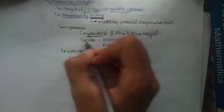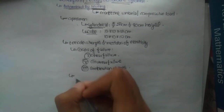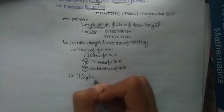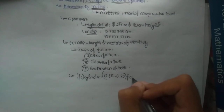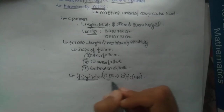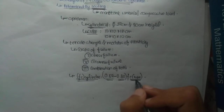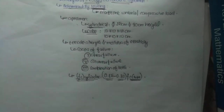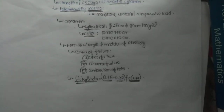The compressive strengths of cylindrical and cubical specimens are interrelated: Fc(cylinder) equals 0.80 to 0.85 × Fc(cube). This basically means the compressive strength of a cylinder is 80% to 85% of the compressive strength of a cube, meaning the compressive strength of the cube is higher than that of the cylinder.